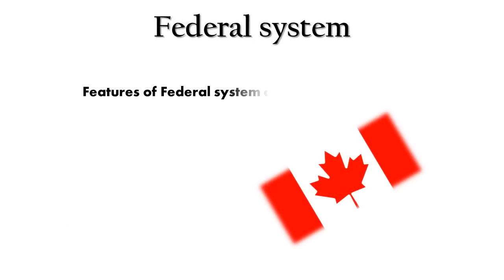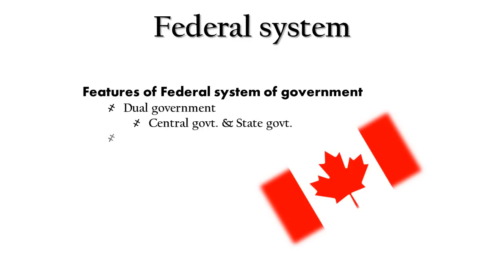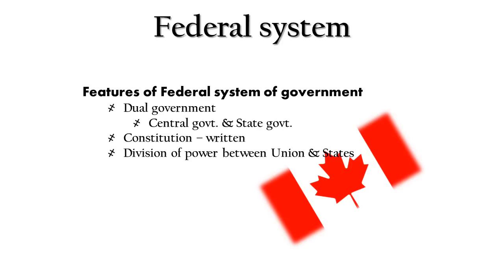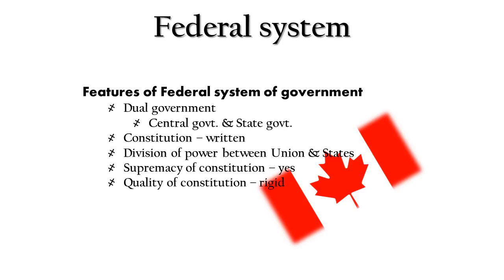Coming to the features of the federal system of government: unlike the unitary system where variables vary, here all features are definite. The government is dual — both central and state governments are given power. The constitution is written. Division of power is followed for both the union and states. The constitution is the supreme law. The judiciary is independent and does not depend on the government. The legislature is bicameral, containing a lower house and an upper house.